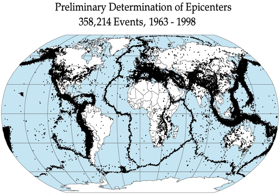Floods may be secondary effects of earthquakes if dams are damaged. Earthquakes may cause landslips to dam rivers, which collapse and cause floods. The terrain below the Sarez Lake in Tajikistan is in danger of catastrophic flood if the landslide dam formed by the earthquake, known as the Usoi Dam, were to fail during a future earthquake. Impact projections suggest the flood could affect roughly 5 million people.